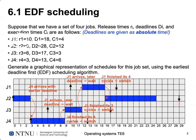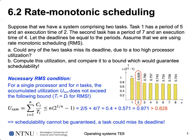Then we switch to job one, which executes its four time units — it still has an earlier deadline than job two, which was interrupted at the beginning. Only when job one finishes all four cycles do we switch back to job two, which can then execute its remaining cycles. Scheduling jobs with EDF is relatively simple: just consider the deadlines, which are given in absolute time units.